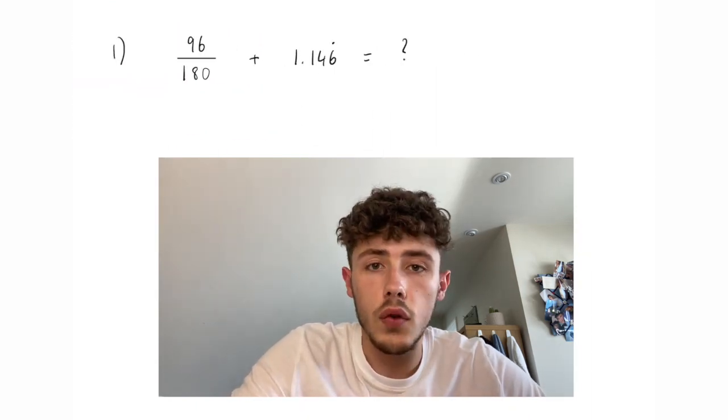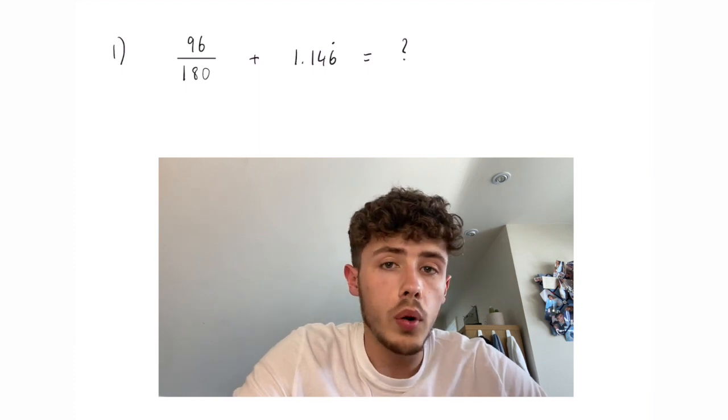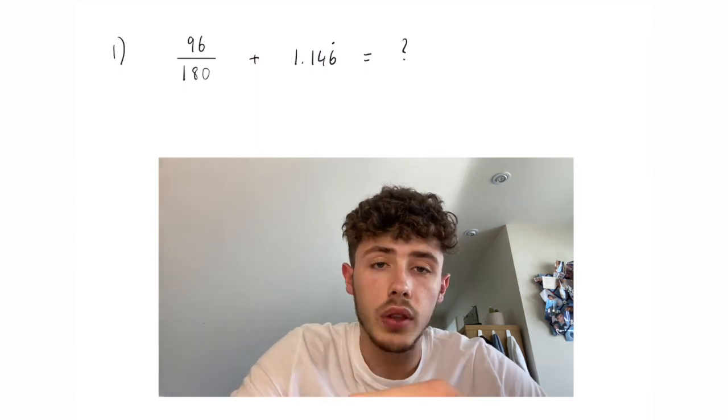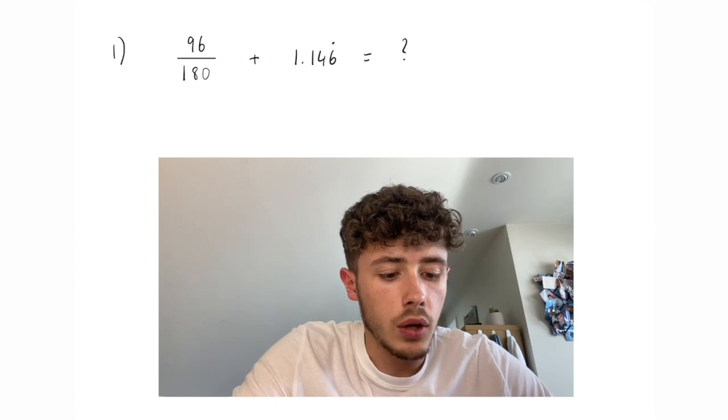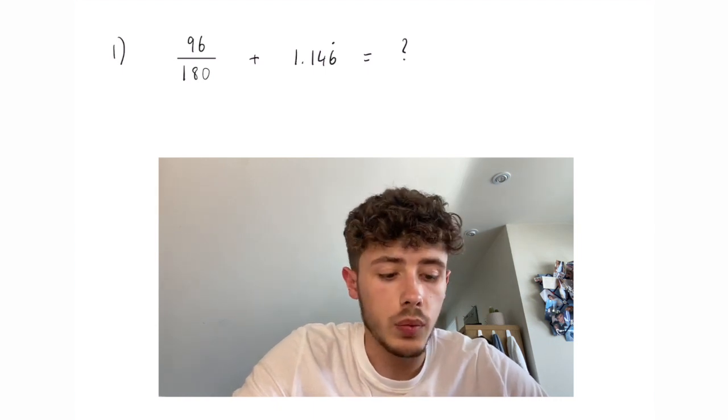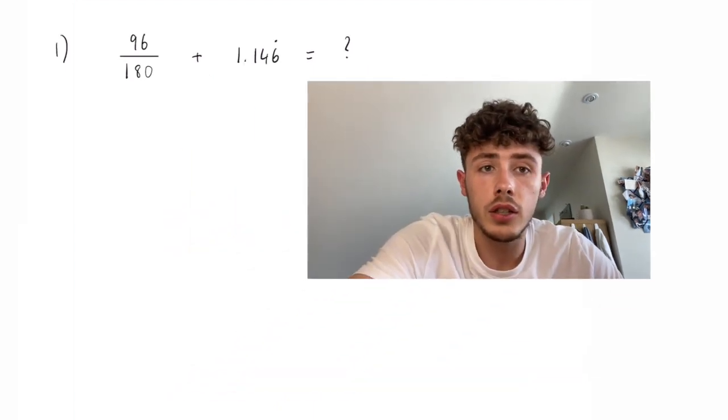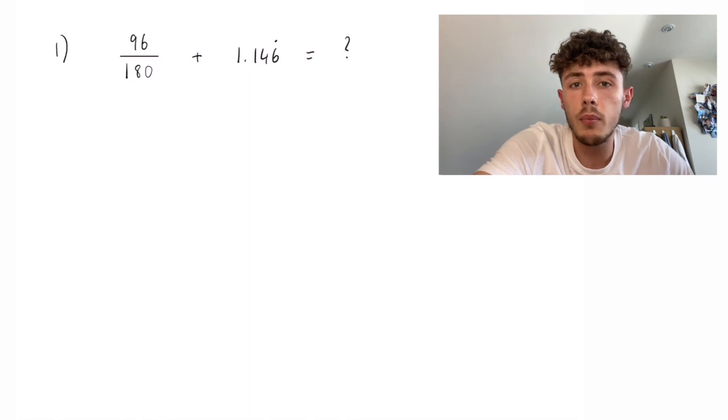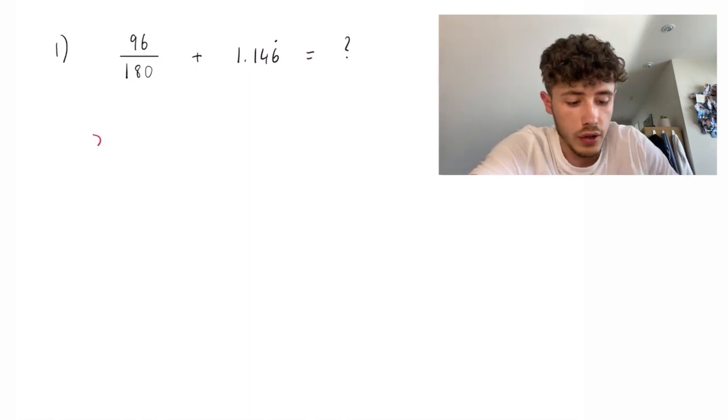We have 96 over 180 plus 1.146 with the recurring on top. So, obviously, first of all, when we're adding fractions, we want to find the common denominator. So, starting off, we're going to need to convert the 1.146 into a fraction.